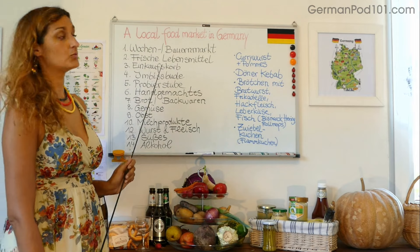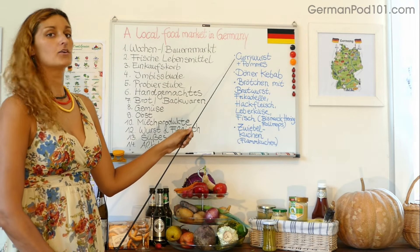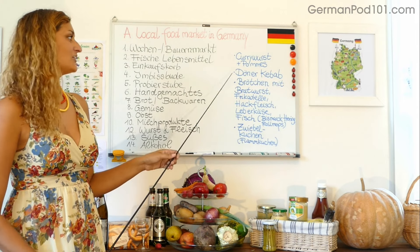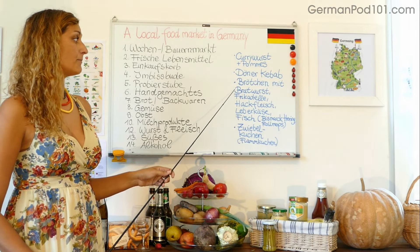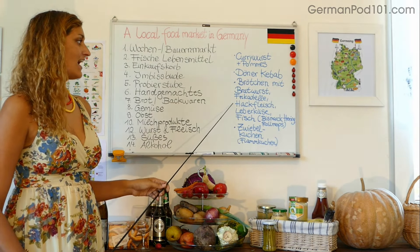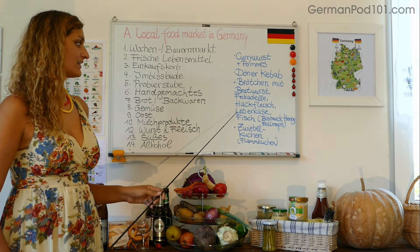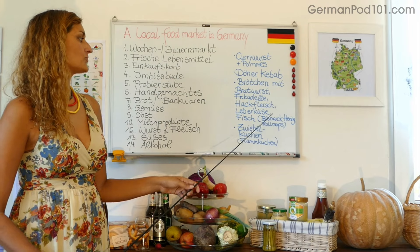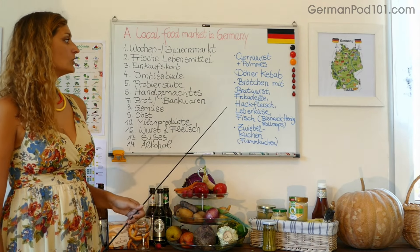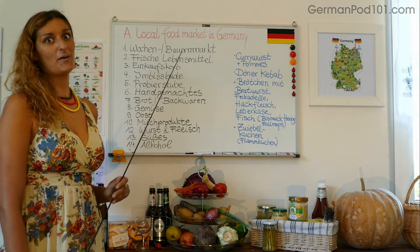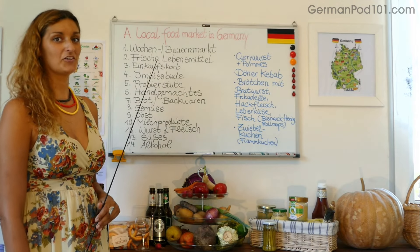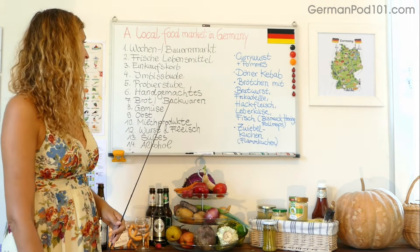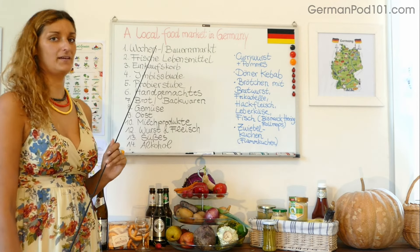An der Imbissbude kann man zum Beispiel Currywurst oder Pommes probieren — habt ihr bestimmt schon mal gehört. Oder Brötchen mit Bratwurst, Frikadelle, Hackfleisch, Leberkäse oder ein Fischbrötchen. Typisch ist da der Rollmops oder der Bismarckhering. Oder auch Döner Kebab gibt es an der Imbissbude — der türkische Döner Kebab. Oder Zwiebelkuchen, Flammkuchen sagt man dazu auch. Später hört ihr dann noch mehr darüber.